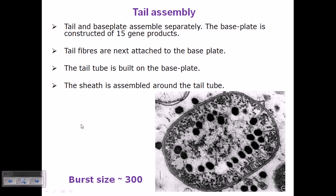the baseplate. The baseplate is first, then the tail fibers are attached to it, then the tail tube is built onto the baseplate. As the baseplate and tail tube are built, they attach to the viral head. After this attachment, the sheath is assembled around the tail tube.